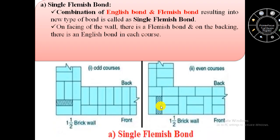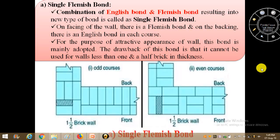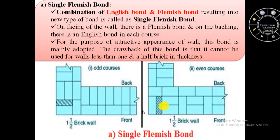In this image we can see the facing and backing of single Flemish bond. On the facing of the wall there is a Flemish bond, and on the backing of the single Flemish bond there is English bond in each course. For the purpose of attractive appearance of the wall this bond is mainly adopted. However, the drawback of single Flemish bond is that it cannot be used for walls less than one and a half brick in thickness.